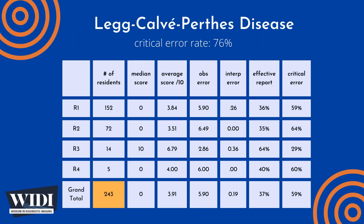Over the last 10 years, the Department of Radiology at the University of Florida College of Medicine has conducted a simulation-based evaluation of radiology resident competence in critical care imaging. 243 residents interpreted this case of Legg-Calvé-Perthes disease as one of 65 cases during an eight-hour simulated on-call shift, with a median score of 0 out of 10 and an overall average score of 3.91 out of 10.